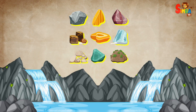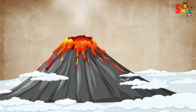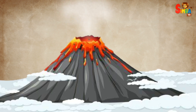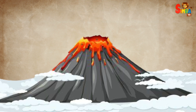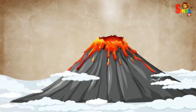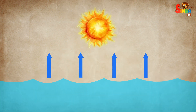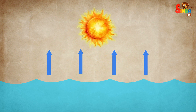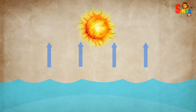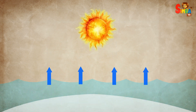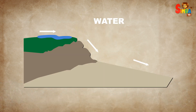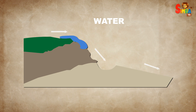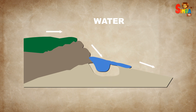Rainfall also contributes minerals, and volcanic activity further releases minerals into the sea. As sunlight evaporates water from the sea, it leaves behind concentrated salt, elevating the water's salinity.